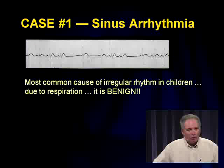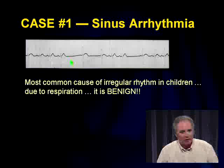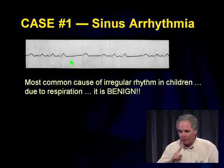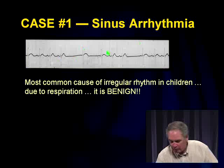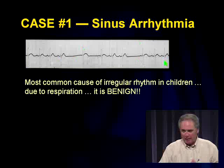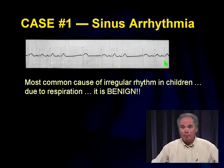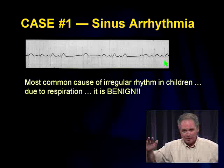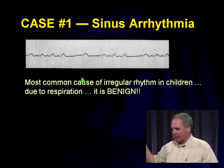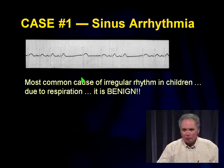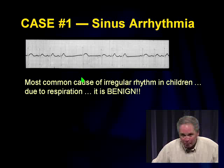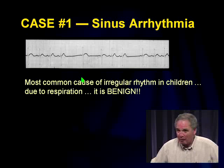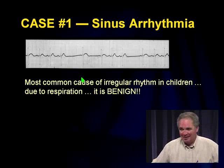When looking at the tracing, start where it looks most normal: P-Q-R-S-T, a pause, P-Q-R-S-T — that's sinus arrhythmia. It's the most common cause of irregular rhythm in children. When you breathe in, heart rate increases; when you breathe out, it decreases. It's normal — the more prominent it is, the healthier the person. It's especially evident in children and in dogs.